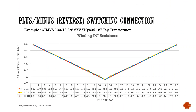For DC winding resistance, we have an example: a 467 MVA transformer, 132 over 13.8 over 6.6 kV, with vector group YNYN0D1 and 27 taps. The DC winding resistance is as shown in the curve. Tap number 1 and tap number 27 have the highest value and both are the same. Tap number 14, the tap changer mechanical center tap, has the lowest value.